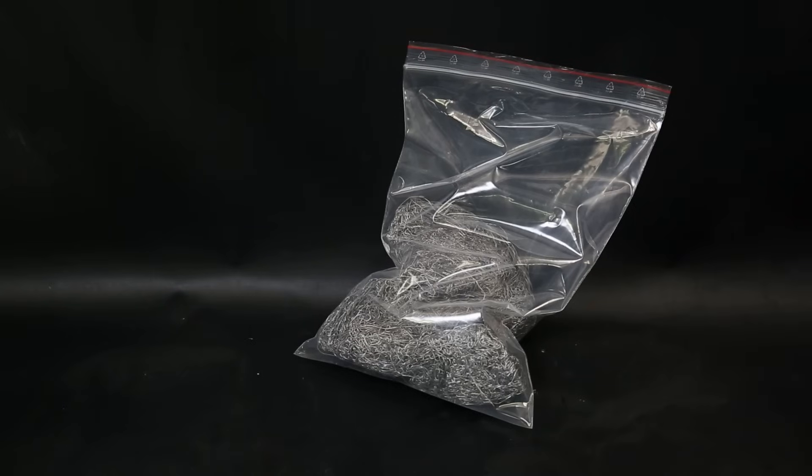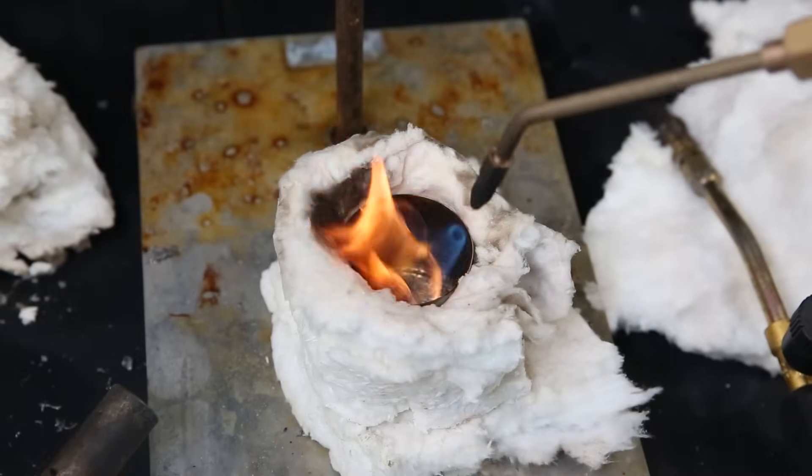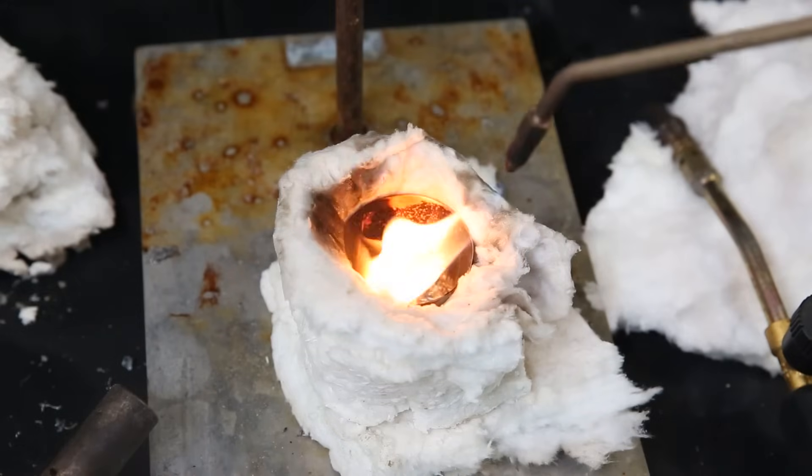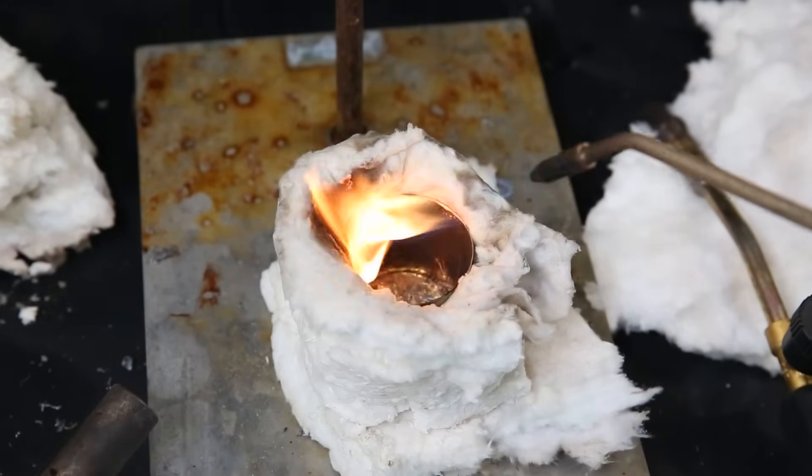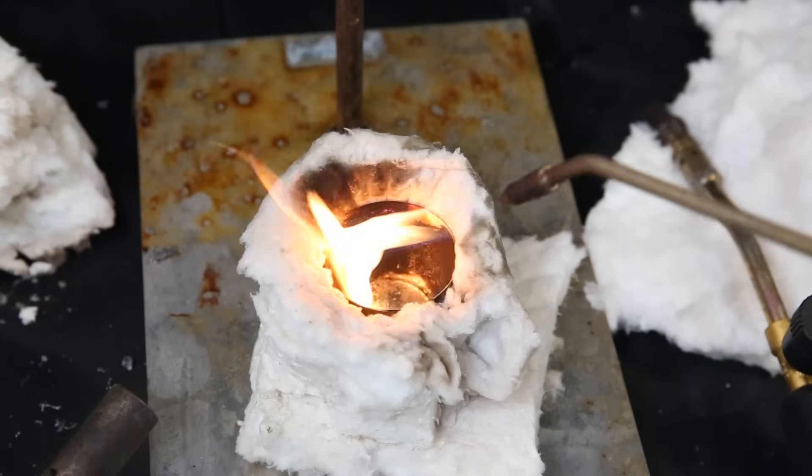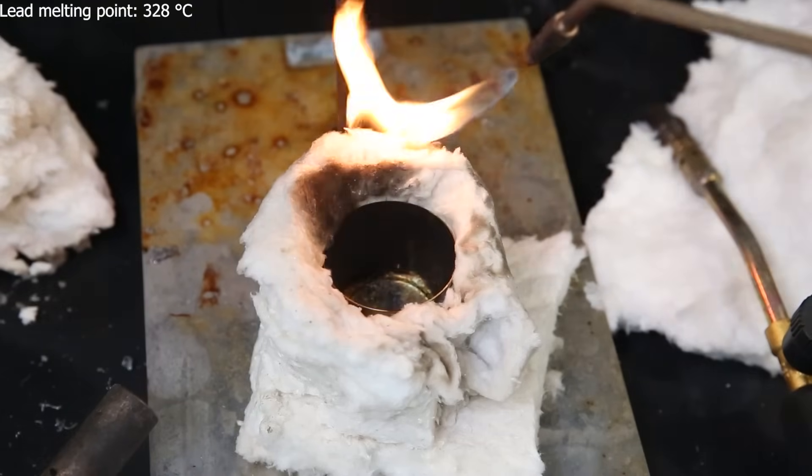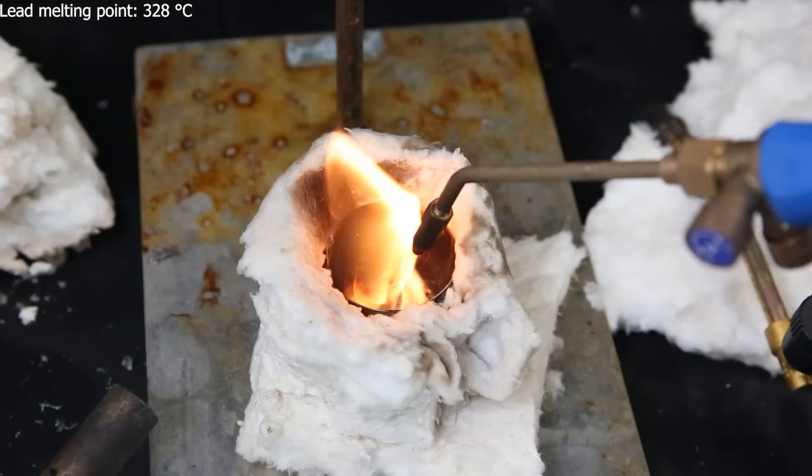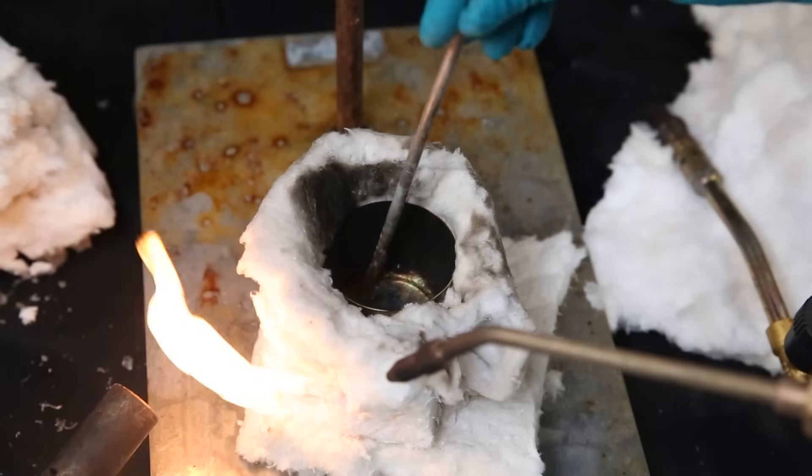After some testing, I settled on this ghetto setup for the first part of the synthesis. It is a stainless steel crucible wrapped in mineral wool. I put a bit of lead wool in the crucible and melted it with a torch. The melting point of lead is only 328°C, so it doesn't really require any specialized equipment.